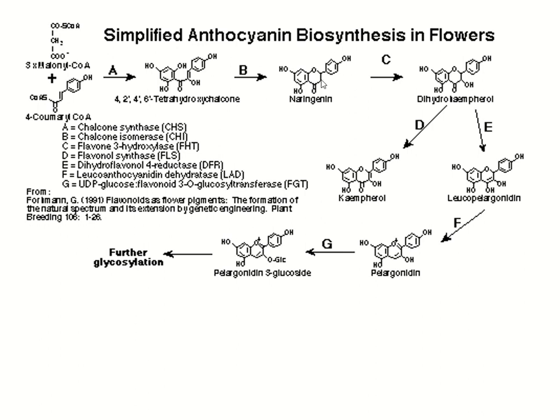Naringenin is formed. The enzyme required is chalcone isomerase. From 4,2,4,6-tetrahydroxychalcone, chalcone isomerase converts it to naringenin. Every color has its flavonoids — flavanones. So naringenin forms the flavonoid structure.